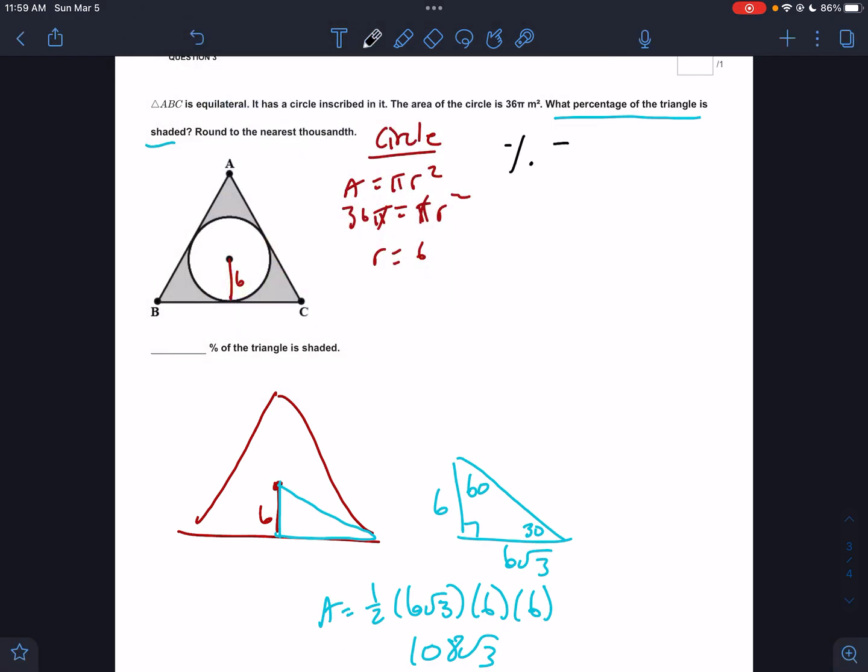What percentage of the triangle is shaded? So the strategy here, if I'm solving this, is the percentage would equal triangle minus circle divided by triangle times 100. So that's going to be triangle 108 root 3 minus circle, which they told us is 36π, divided by triangle 108 root 3 times 100. Round to the nearest thousandth. So hit the fraction key: 108 root 3 minus 36π divided by 108 root 3 times 100.